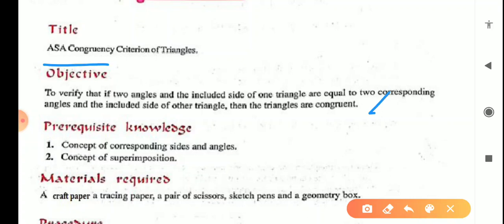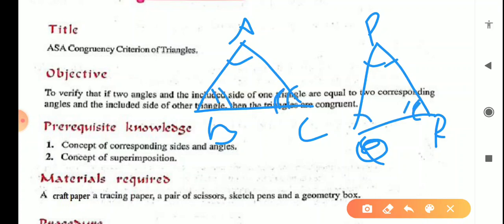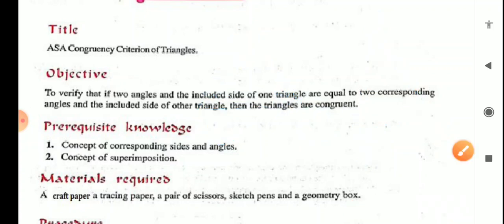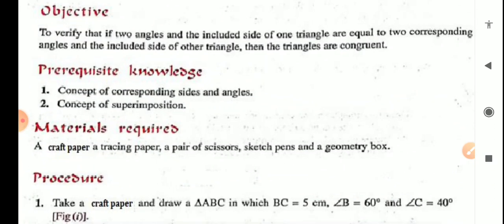Prerequisite knowledge. Number 1: concept of corresponding sides and angles. If you have two triangles ABC and PQR that are congruent, then angle A corresponds to angle P, angle B corresponds to angle Q, and angle C corresponds to angle R — those are corresponding angles and corresponding sides. Number 2: concept of superimposition — superimpose means to overlap one triangle on another, to coincide them. Two triangles are congruent when the first triangle coincides with the other triangle.